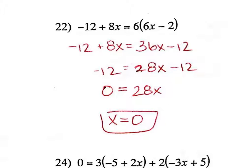Question 22: I distributed first, then subtracted 8x from both sides to get 28x. The 12s cancel each other out. You still have an X remaining, so it can't be no solution. You get down to something X equals 0, and 0 divided by anything is 0, so X equals 0.